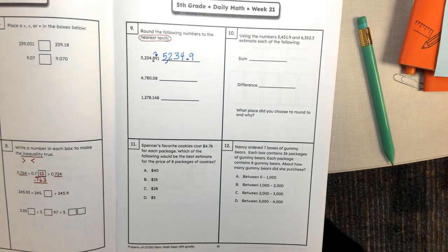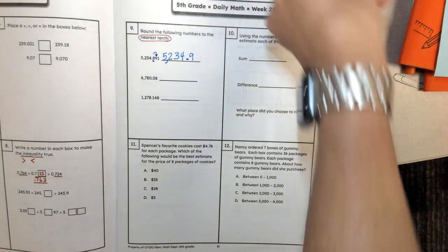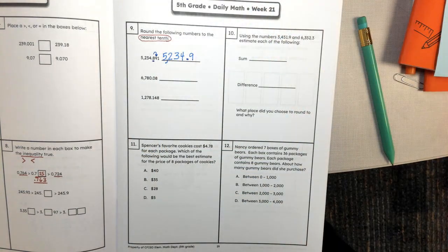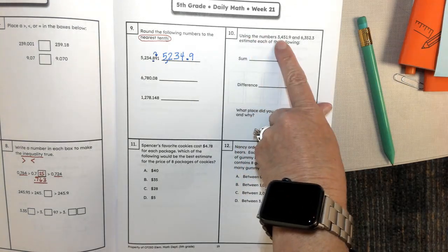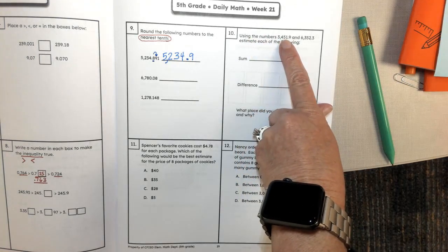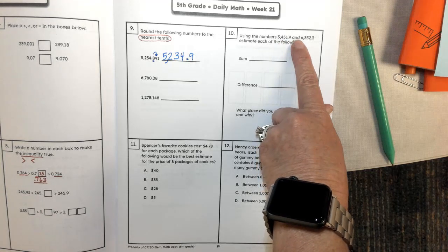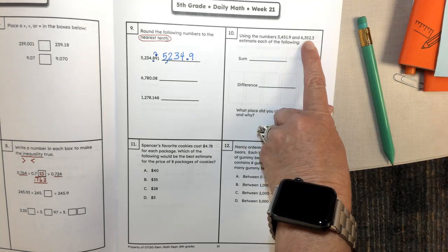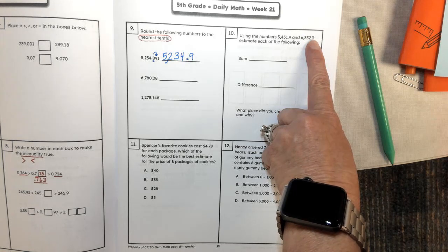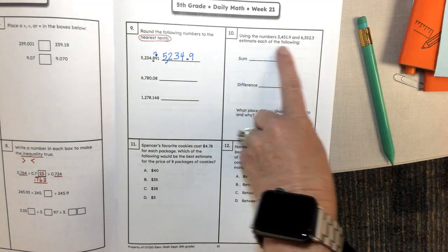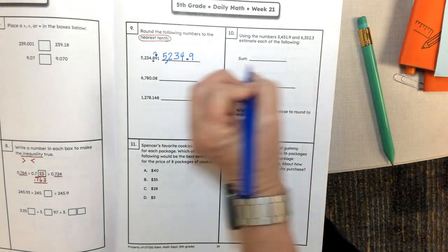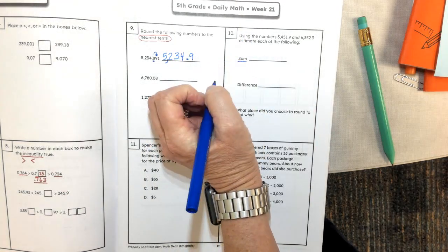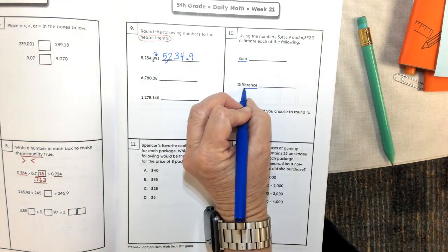You try the next two. This help is for problem number ten. Using the numbers 3,451.9 and 6,352.3, estimate each of the following. I want you to make an easy estimate for the sum and an easy estimate for the difference.